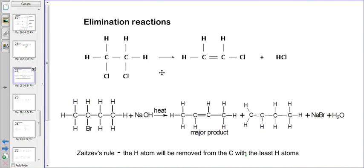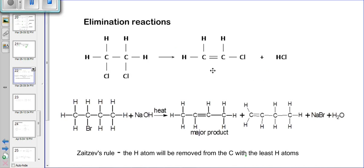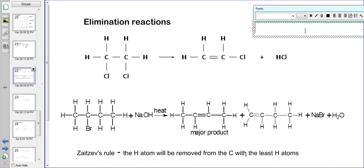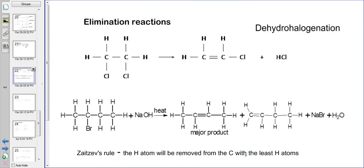If you look at this example, we have a haloalkane where we have two chlorines, and we see that an elimination reaction is taking place. We see that the chlorines are removed — one chlorine is removed from the reaction and one hydrogen is removed from the reaction. So if we have to identify this reaction, we can say it's a dehydrohalogenation reaction, because one hydrogen and one chlorine are removed.